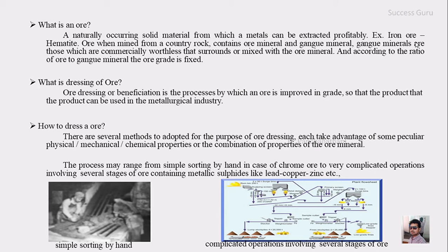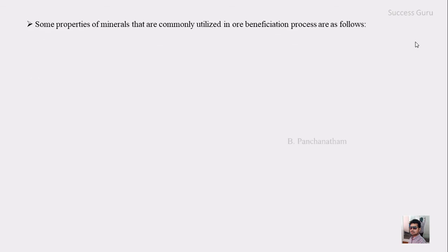So I think you now understand what ore is, what ore dressing is, and how ore dressing takes place. The next thing we will look at is the properties of minerals that are commonly utilized in the ore beneficiation process — that is, what properties are used in ore dressing.